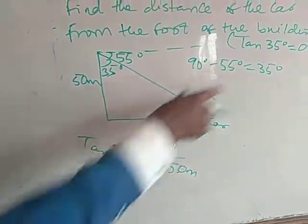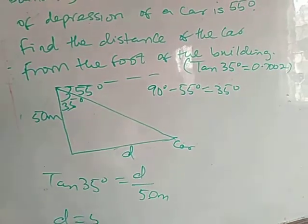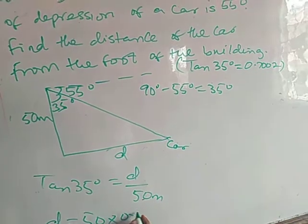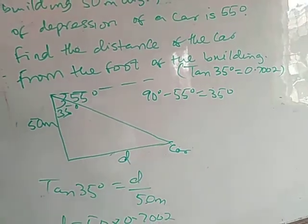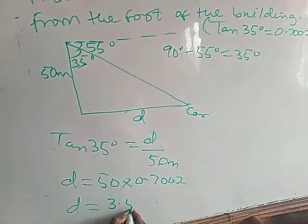From the table, tan 35 degrees equals 0.7002. So D equals 50 times 0.7002, which gives us D equals 35 meters.